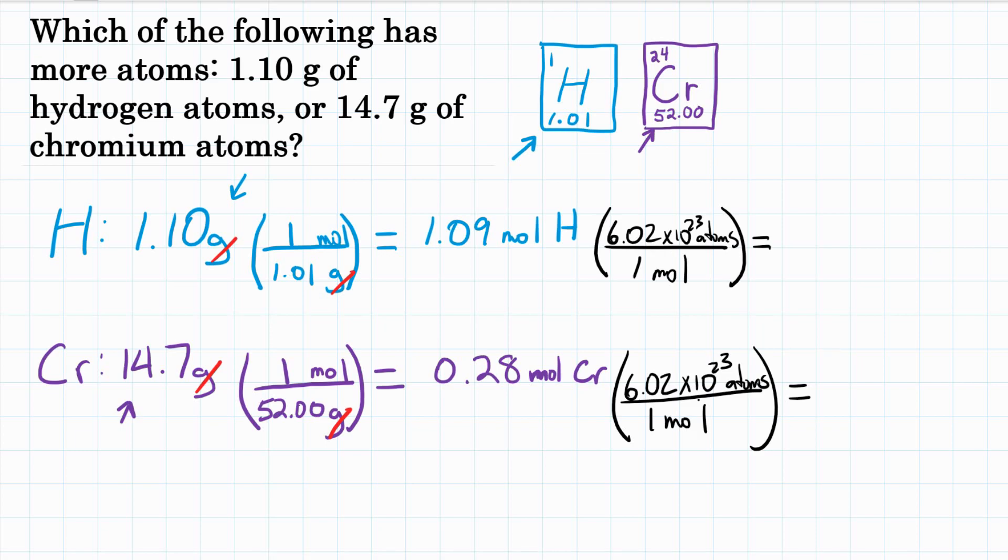But again, a mole is just a number. So we're going to be multiplying each of these by the same number, 6.02 times 10 to the 23rd. So our answer is not going to change. So we don't really need to do that.